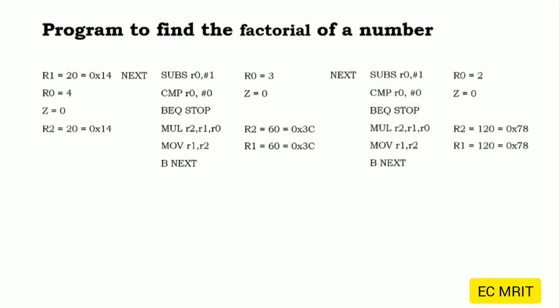Continuing the loop, we decrement R0 from 3 to 2. We check whether R0 is 0 — it is not 0, so we won't jump to the stop label. We continue with the multiplication: R1 × R0, that is 60×2 = 120, which is equivalent to 0x78 in hexadecimal.